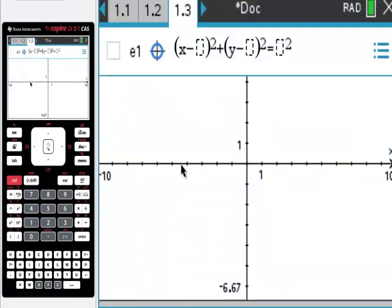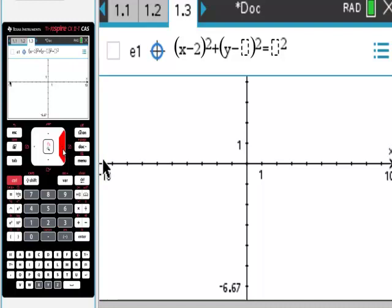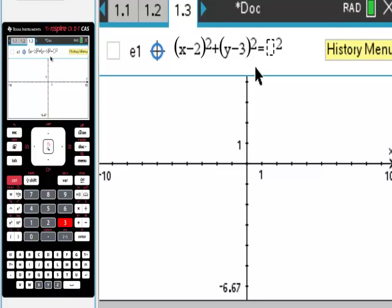My first circle is x minus 2, x minus 2 squared, plus, plus y minus 3, minus 3 squared. This is super super important. This is not going to let you put in radius squared. That is to say, you can't put in 9.